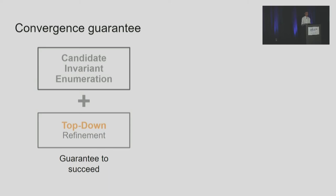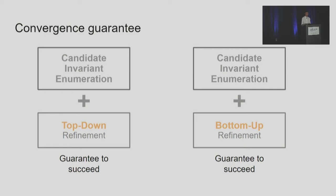We prove that if we run candidate invariant enumeration following the minimum implication graph and then do top-down refinement, we are guaranteed to find a correct inductive invariant if one exists in our search space. The same strong theoretical guarantee also holds for bottom-up refinement. Each method has its own advantages, so Dual AI runs both procedures in parallel and returns whichever succeeds first.